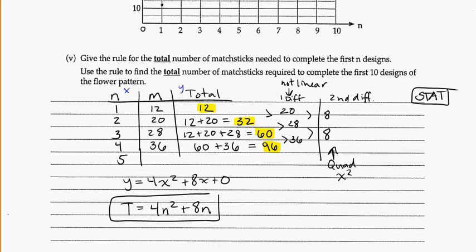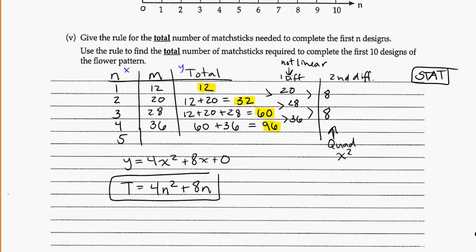And now, we're going to use the rule. Again, they want to know how many matchsticks total would it take to build the first 10 designs. So, they're talking about building designs 1 to 10, all of them. So, n is equal to 10. And again, we can use algebra and substitute that in, if we wanted to. Putting it in. So, we could have t is equal to 4 times 10 squared, plus 8 times 10. And we would get, well, 10 squared is 100. 4 times 100 is 400, plus 80. So, we would get 480.